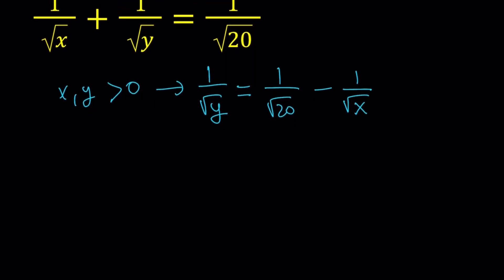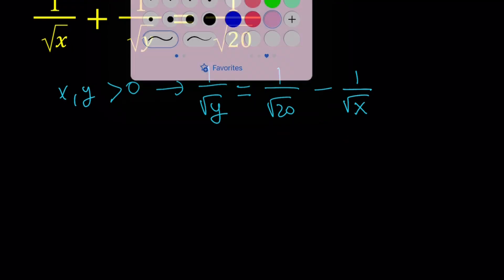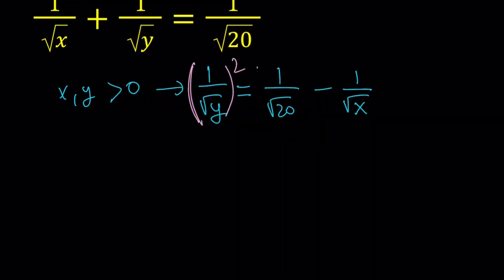Let's go ahead and square both sides. When we do, we're going to square the difference on the right-hand side. So it's going to be 1 over y equals 1 over 20 minus 2 times ab, the term in the middle, plus 1 over x.